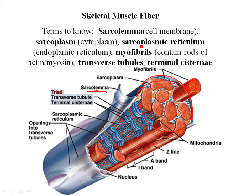You also have the sarcoplasmic reticulum, which you need to learn how to spell. Basically, it's a specialized smooth endoplasmic reticulum — a network of channels providing passageways throughout the cell. In a muscle cell, we want the electrical impulse causing muscle contraction to be generated all over the cell at once for a nice, smooth, even contraction. The sarcoplasmic reticulum has little tubular networks running throughout the cell lengthwise to accomplish this.